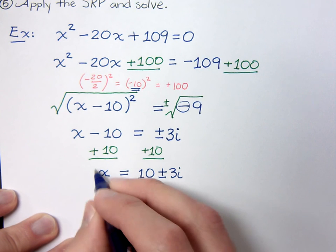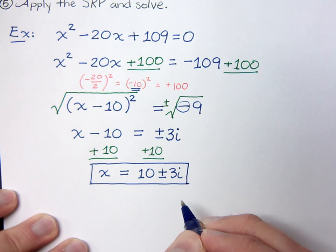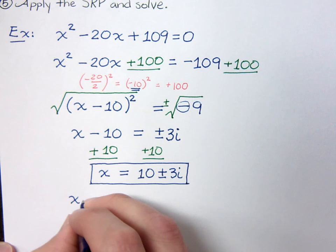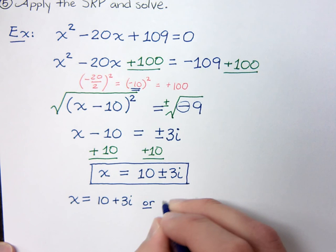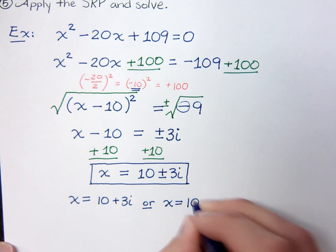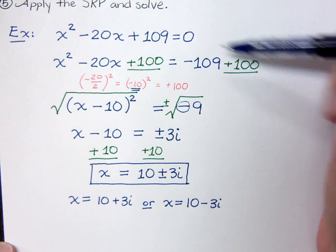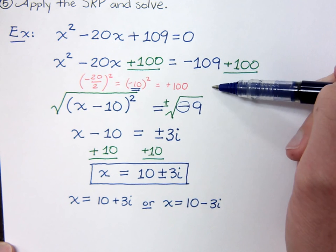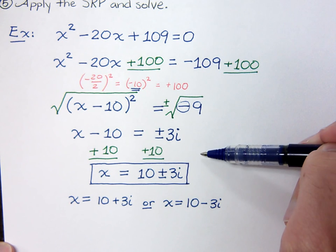So x equals positive ten plus or minus three i. This answer is good enough — there's nothing more to simplify. We can also write this as two separate complex solutions: x equals ten plus three i, or x equals ten minus three i. To review: variables on one side, constant on the other; complete the square by dividing by two and squaring it; apply the square root property; then finish solving.